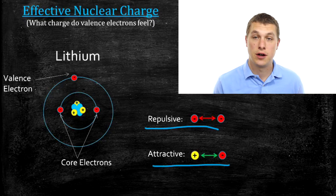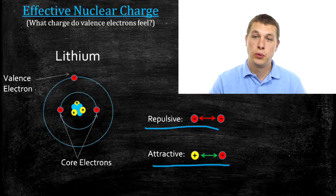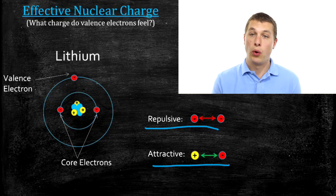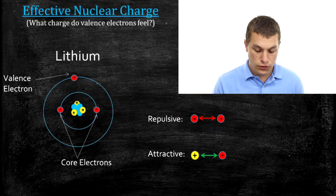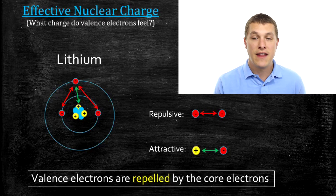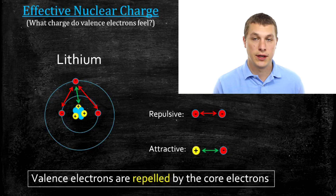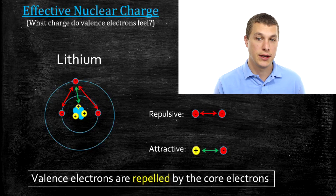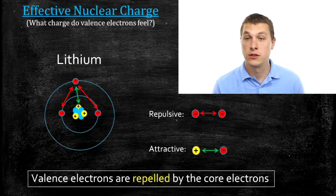Meanwhile, the nucleus with positive charges is pulling that valence electron in. So there's really a tug of war here between the core electrons, which push that valence electron away, and the protons, which pull that valence electron inwards. I've used red and green arrows to represent these attractive and repulsive forces. That means that our outermost electron doesn't feel the full positive charge of the nucleus, because some of those electrons are pushing back on it.